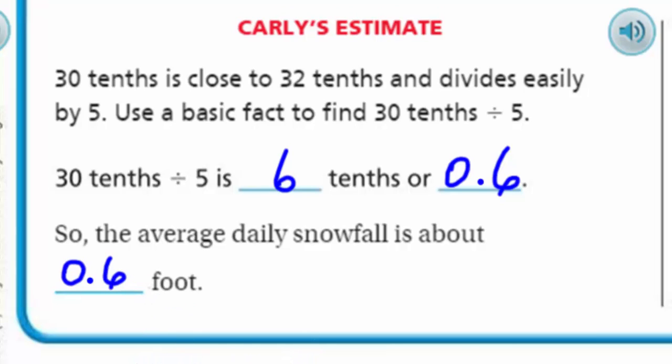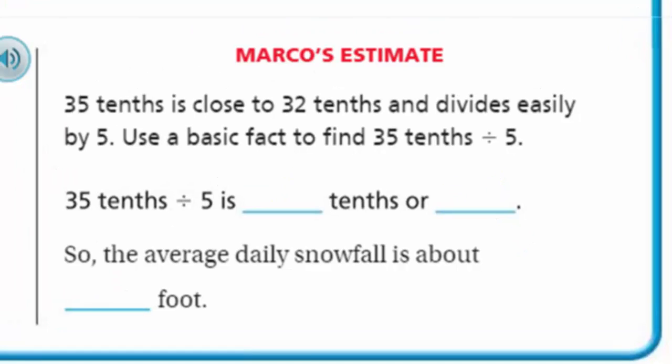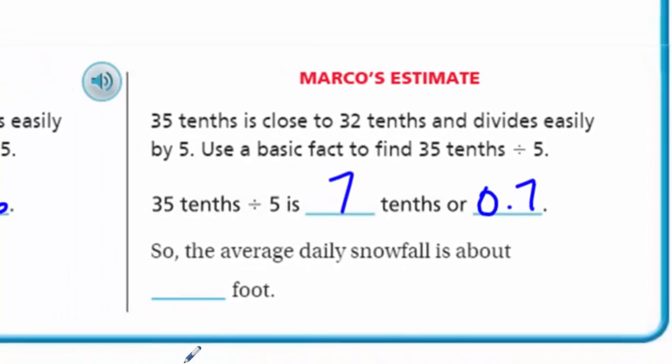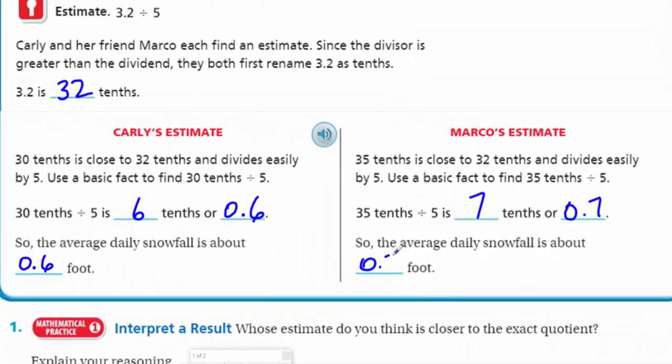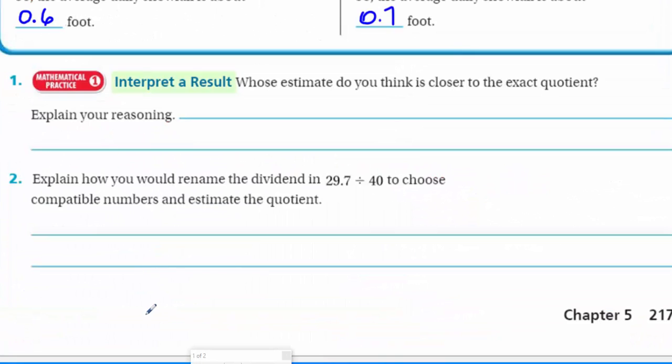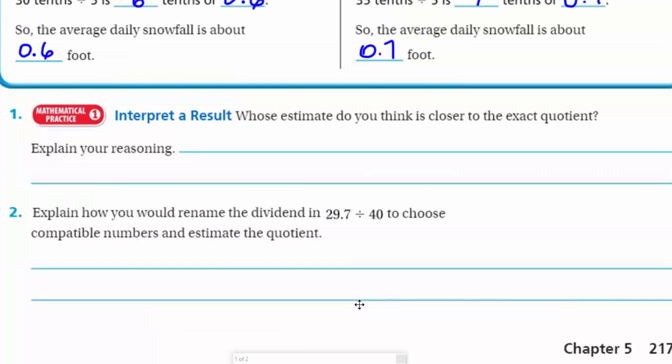Marco's estimate is a little bit different. He chose 35 because he knows 35 is compatible with 5 because 35 divided by 5 equals 7. So 35 tenths divided by 5 is 7 tenths or 0.7. So the average daily snowfall is about 0.7 foot.